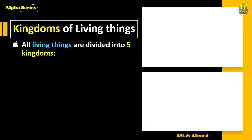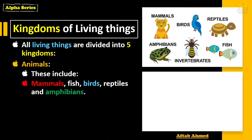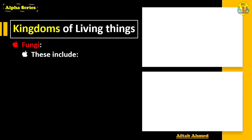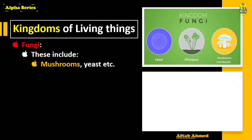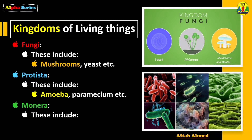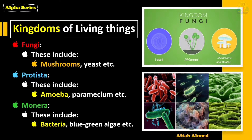Kingdoms of living things: All living things are divided into five different kingdoms. The first is the animal kingdom, which includes mammals, fish, birds, reptiles, and amphibians. The second is the plant kingdom, which includes herbs, shrubs, climbers, trees, and creepers. The third is the fungi kingdom, which includes mushrooms, yeast, rhizopus, and molds. The fourth is the protista kingdom, which includes amoeba, paramecium, euglena, etc. And the fifth is the monera kingdom, which includes bacteria and blue-green algae, etc.